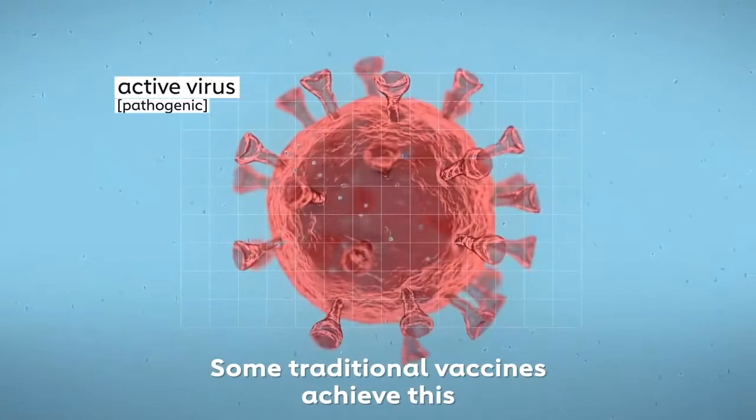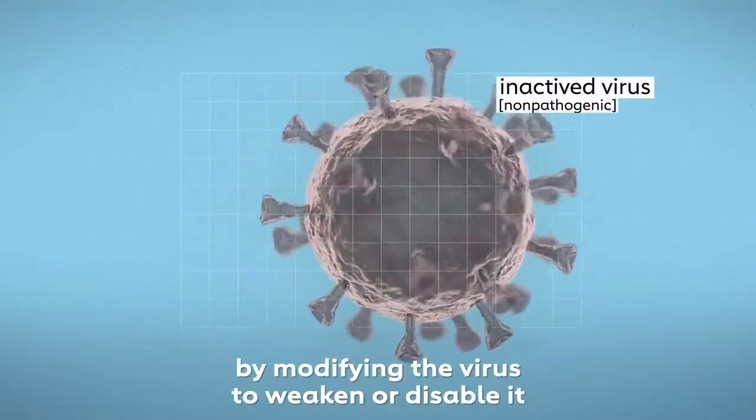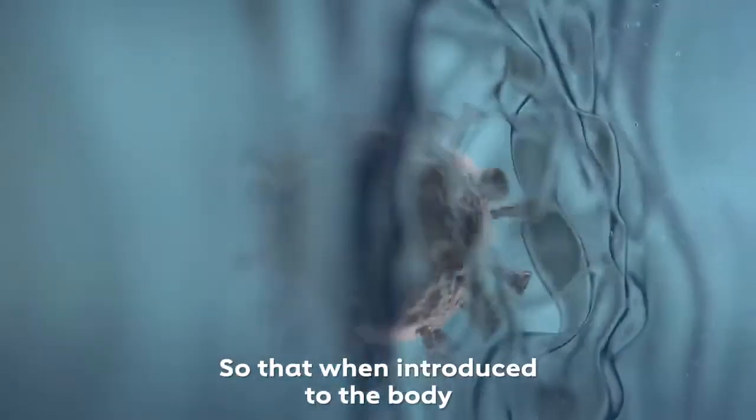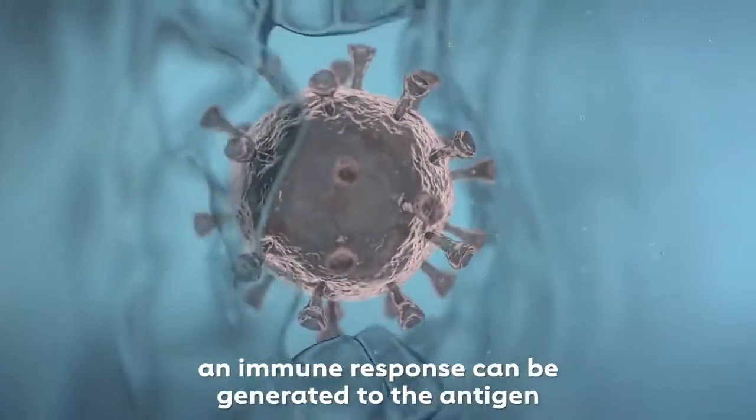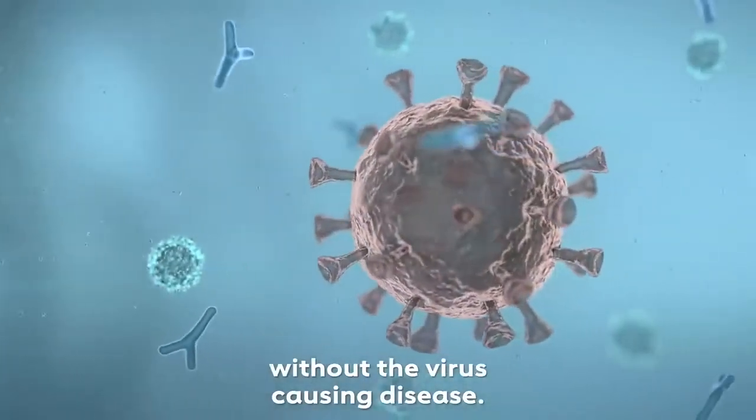Some traditional vaccines achieve this by modifying the virus to weaken or disable it, so that when introduced to the body, an immune response can be generated to the antigen without the virus causing disease.